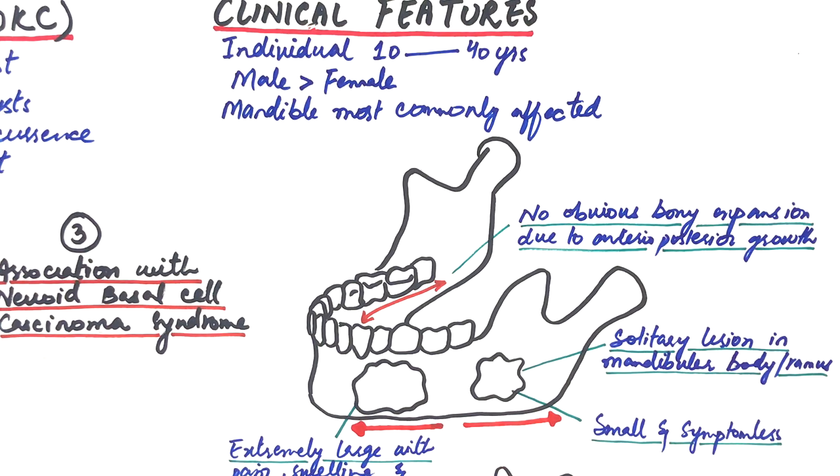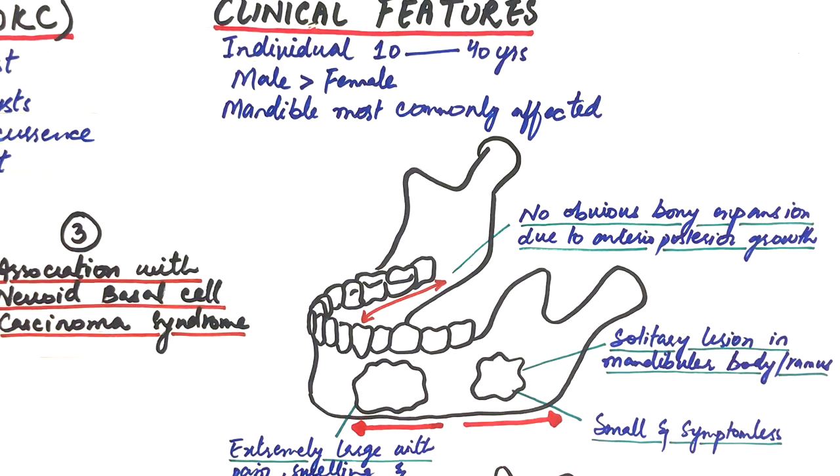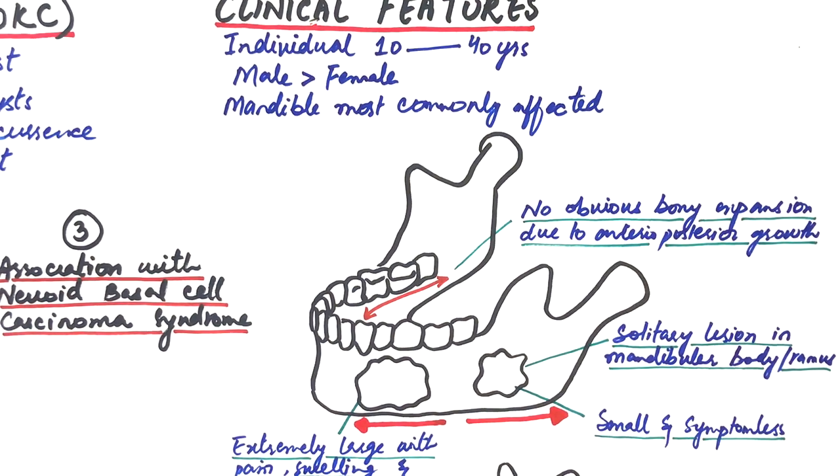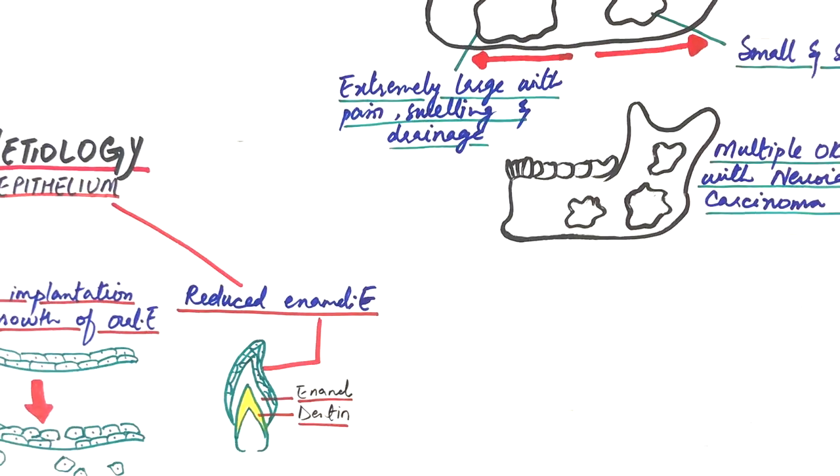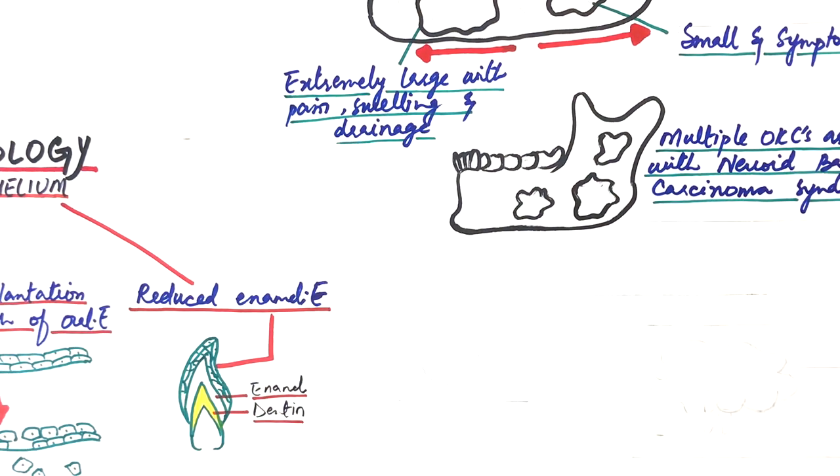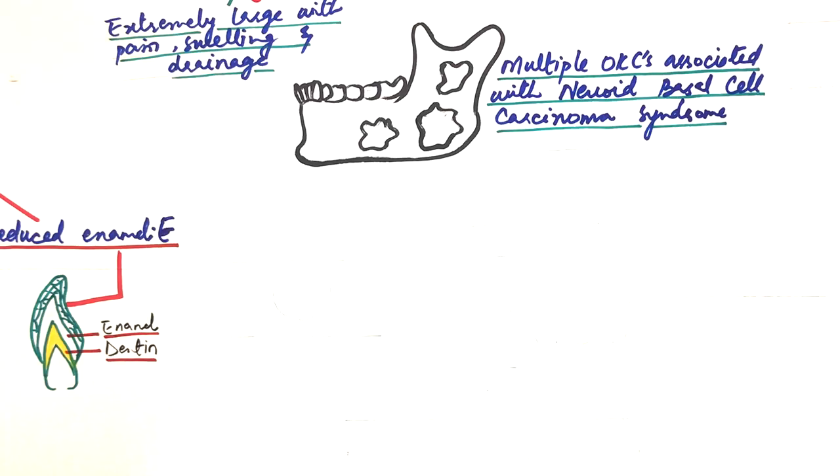Mobility and displacement of teeth are also associated with large OKCs. The cyst rarely causes resorption of the roots of adjacent teeth. And excessive expansion and thinning of bone in large cysts may result in bony fracture of the jaws.